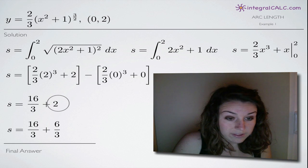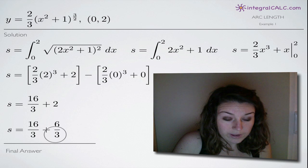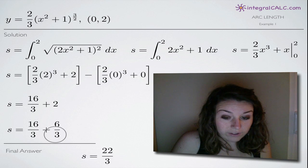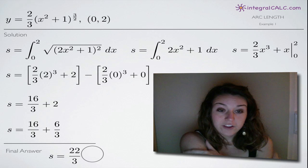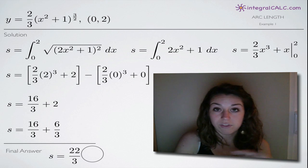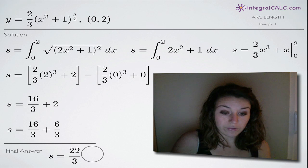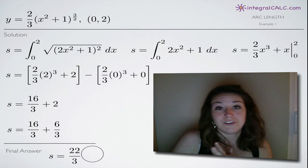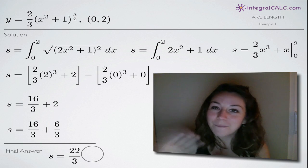If we get a common denominator, we have to multiply this 2 by 3 over 3 so that we get 6 over 3 and we can combine these 2 fractions using this common denominator of 3 and we get our final answer of s equals 22 over 3. So the length of the curve in 2 dimensional space, the length of the graph between 0 and 2 is 22 thirds. And that's our final answer. So I hope that helped you guys and I'll see you in the next video.